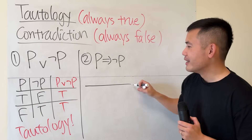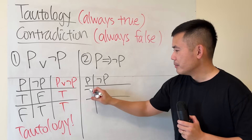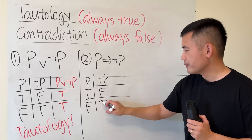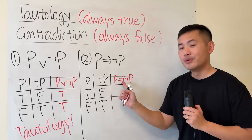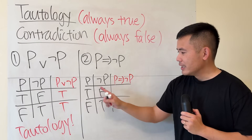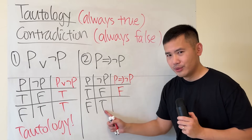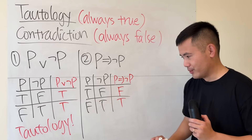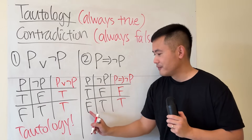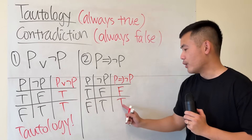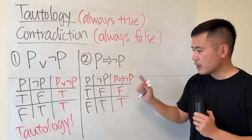Let's check with a truth table: p and not p give rows true/false and false/true. For the implication p → not p: true implying false is false. But false implying true is true, because when the first condition is false, the whole implication is true regardless of the conclusion. So this gives neither always true nor always false — it is neither a tautology nor a contradiction.